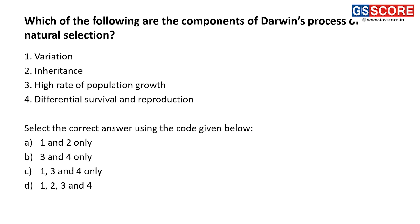Next question: which among the following are the components of Darwin's process of natural selection? Darwin's theory of natural selection has the following components: variation, inheritance, high rate of population growth, and differential survival and reproduction. All of these are components of Darwin's natural selection, and that is why the answer is D, 1, 2, 3 and 4. Thank you.